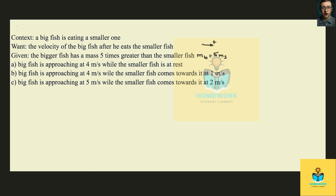On part A, the big fish is approaching at four meters per second while the smaller fish is at rest. The initial momentum is equal to the mass of the big fish times the velocity of the big fish plus the mass of the small fish times the velocity of the small fish. Since the small fish has zero velocity, we're left with MB times VB. VB is four meters per second, so the momentum is going to be four times MB.